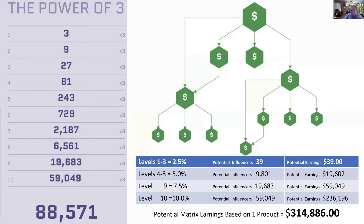Just as an example, on the first three levels — because there are only 39 positions — you make 2.5%, which is $1 per bag. Each bag has 40 CV, so 2.5% of that is a dollar. If you just averaged one bag per person, that'd be $39 on your first three levels. Levels four through eight pay 5%, so that's $2 per bag. There are 9,801 positions on levels four through eight, which would be an extra $19,602 per month.